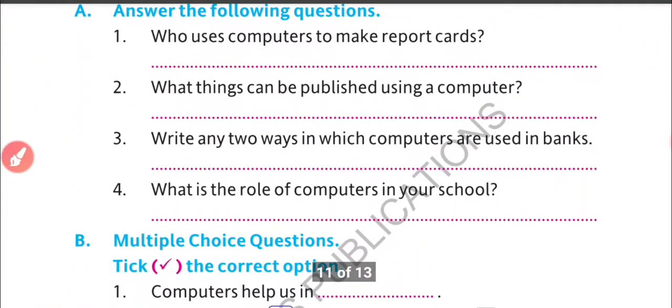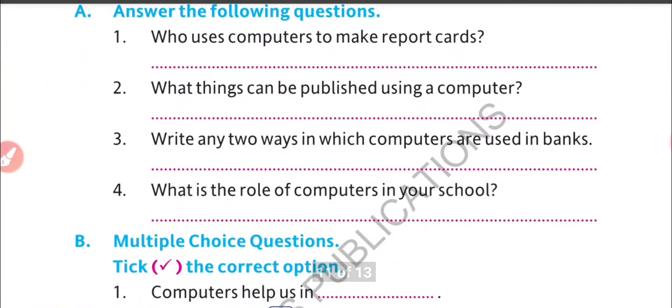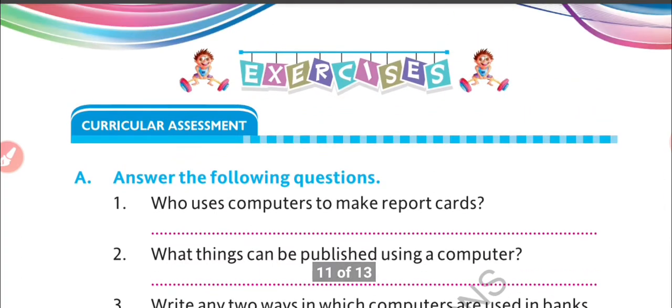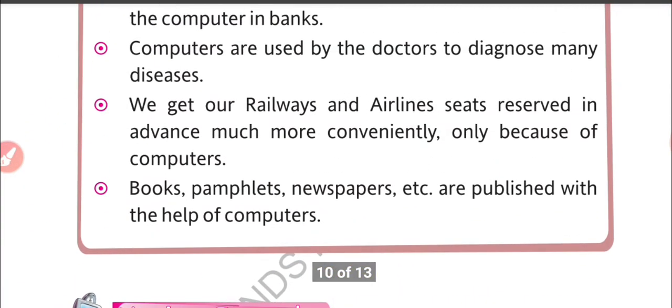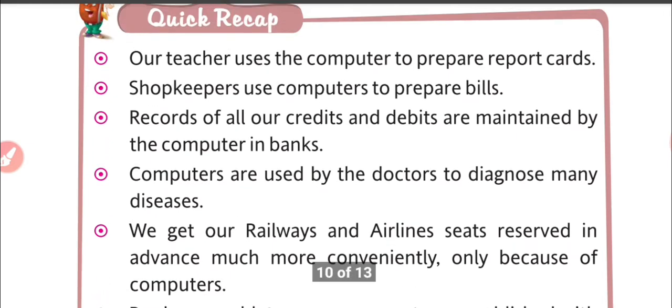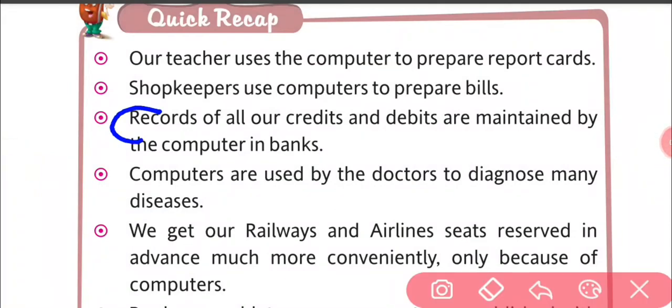And third one is: write any two ways in which computers are used in banks. Two ways you see computer in bank. Note down here, third answer: records of all our credits and debits are maintained by the computer in banks. Third answer over.